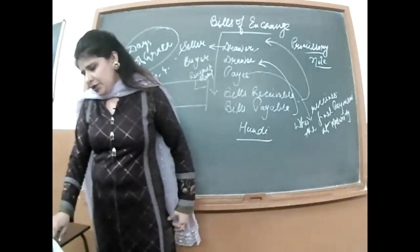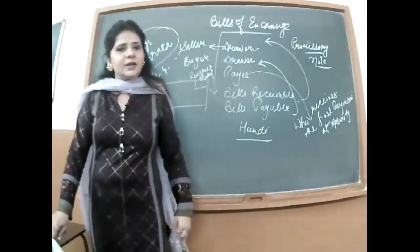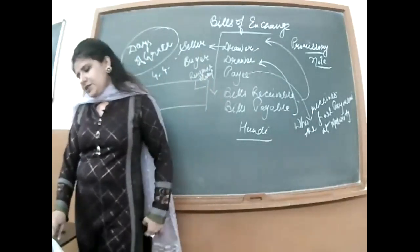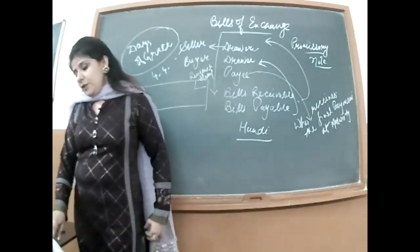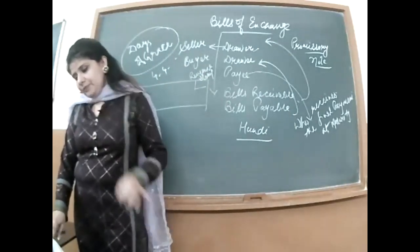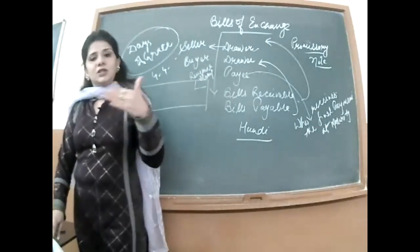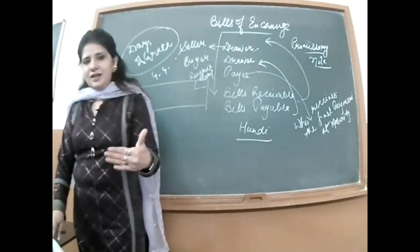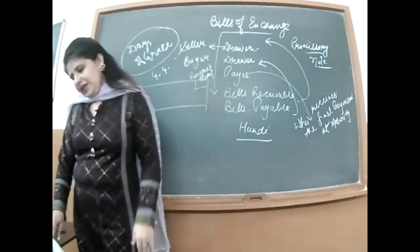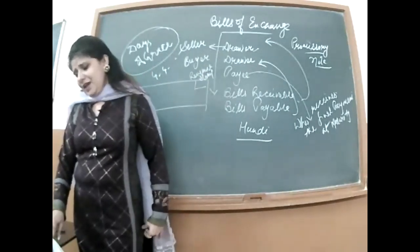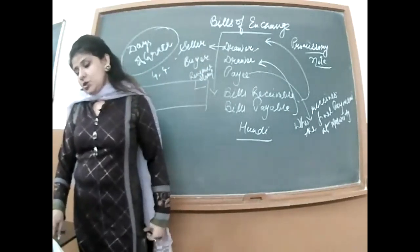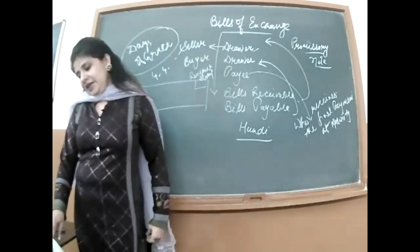It is also known as hundi in rural areas in Indian context. Purane zamane mein hundis kehte the; aajkal hundis exist bahut kam karti hain. The Bills of Exchange is one of the most common forms of negotiable instrument — negotiable because the document was designed through discussion and agreement. India mein sabse pehla Negotiable Instruments Act bana in 1881.